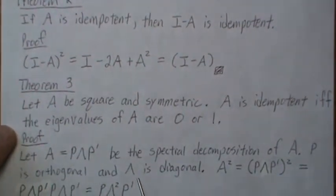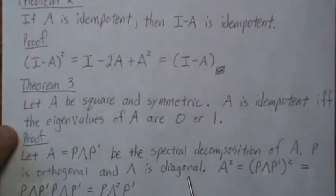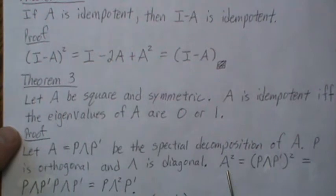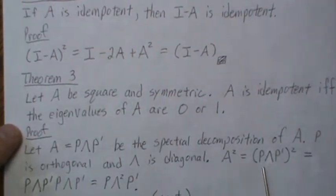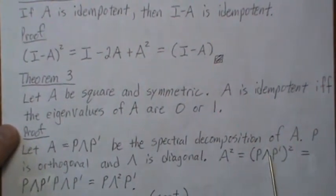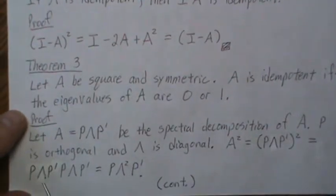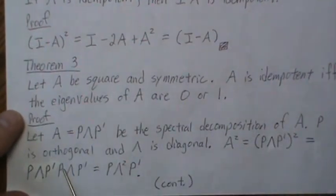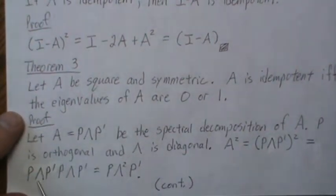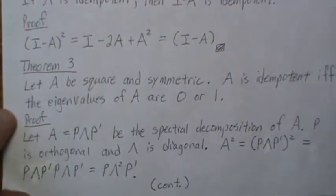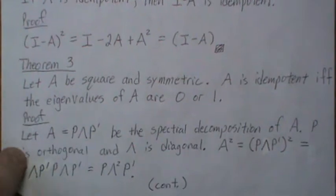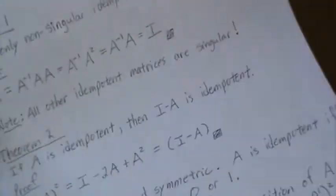A squared is actually the spectral decomposition squared. But P prime P is the identity, so we get P lambda squared P prime. That's going to play a part in the rest of the proof.